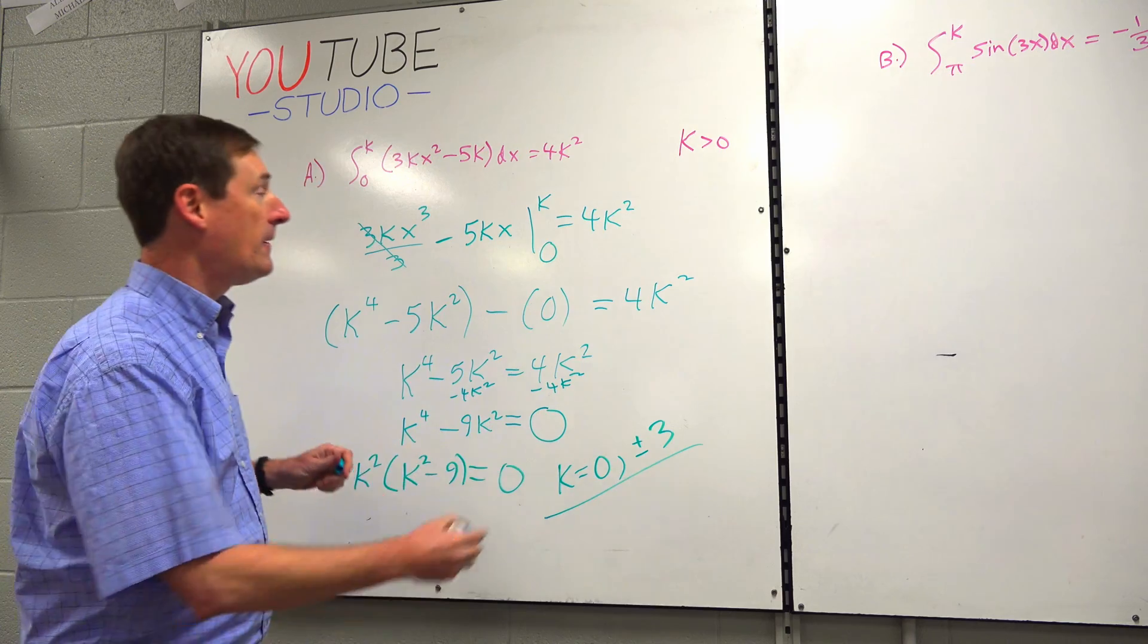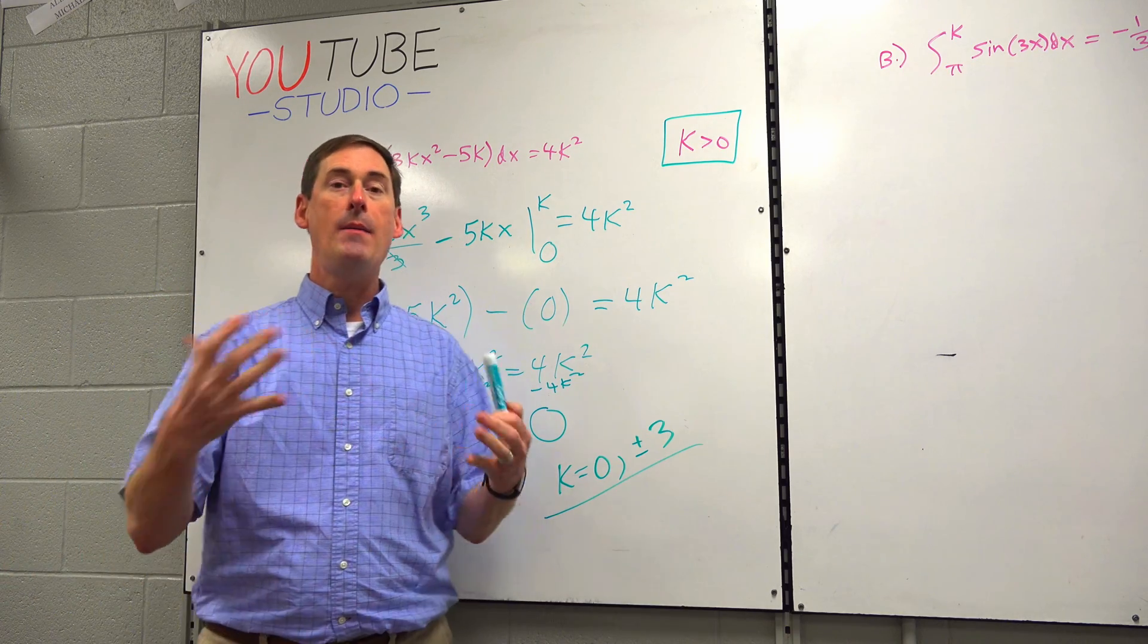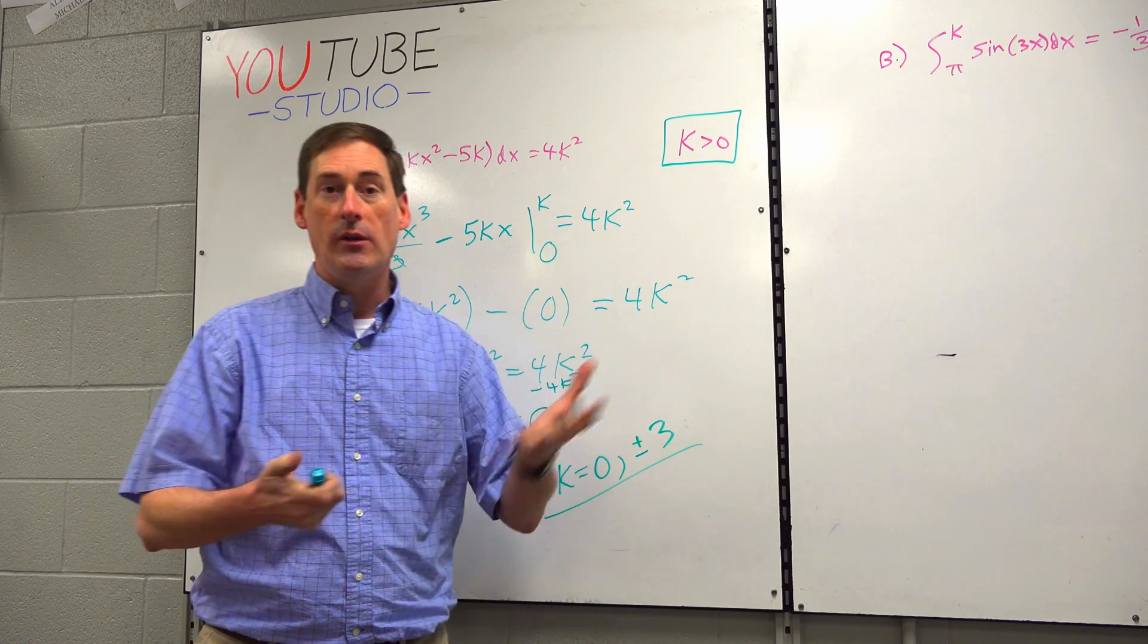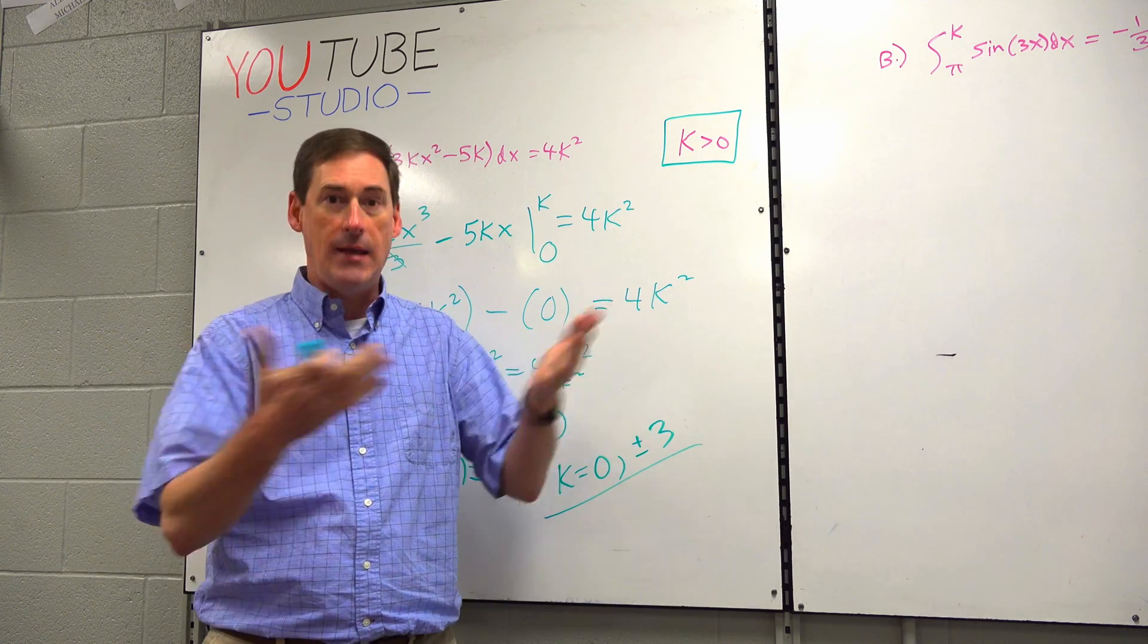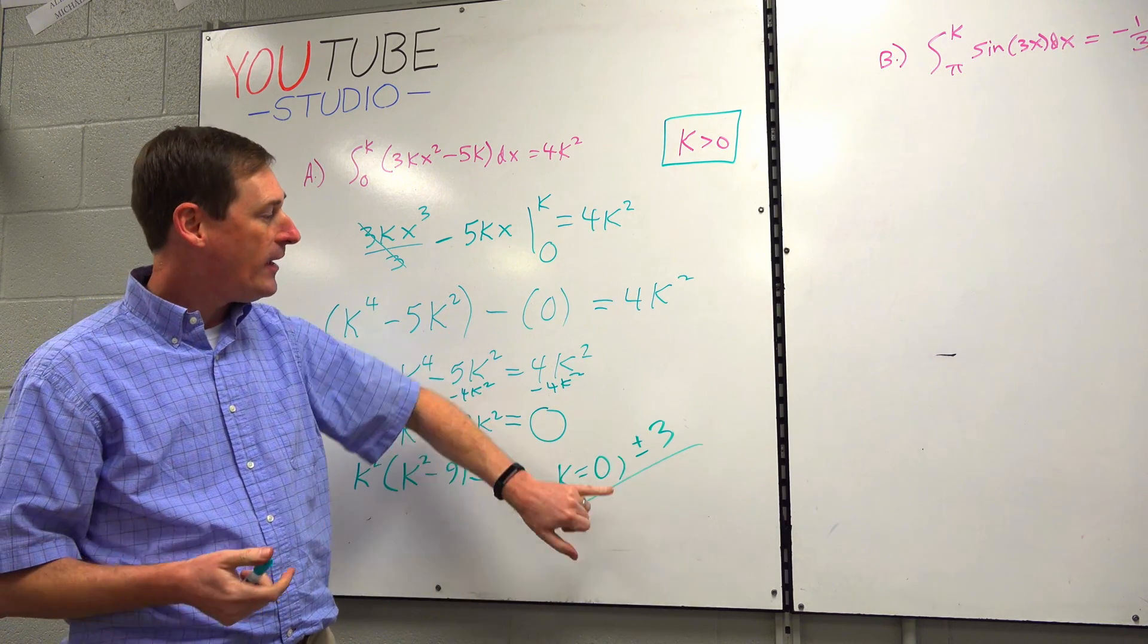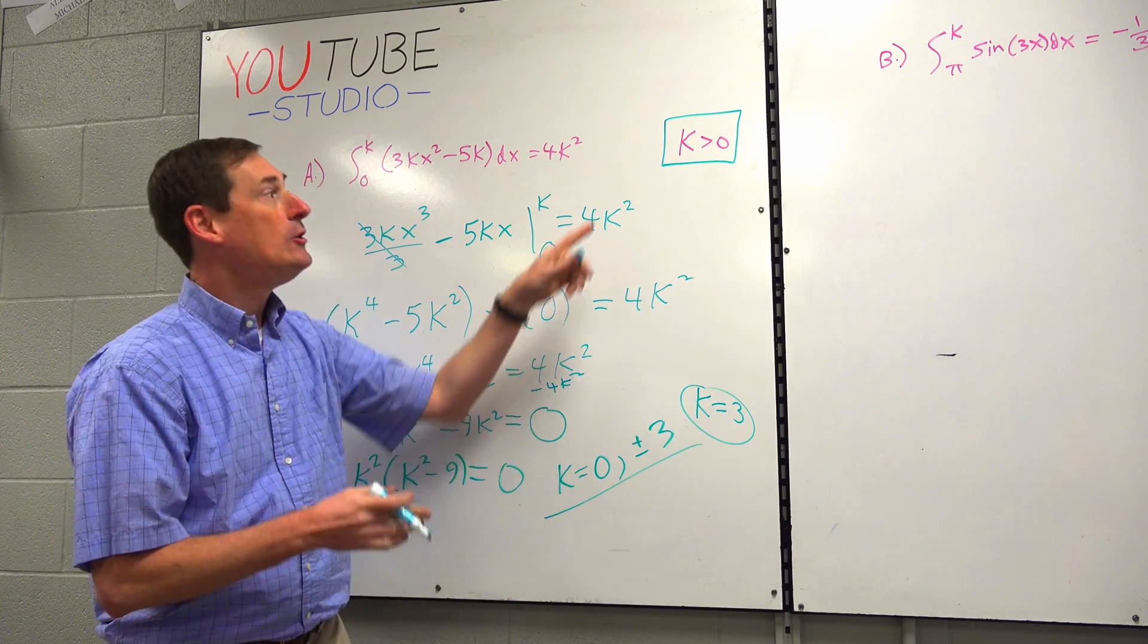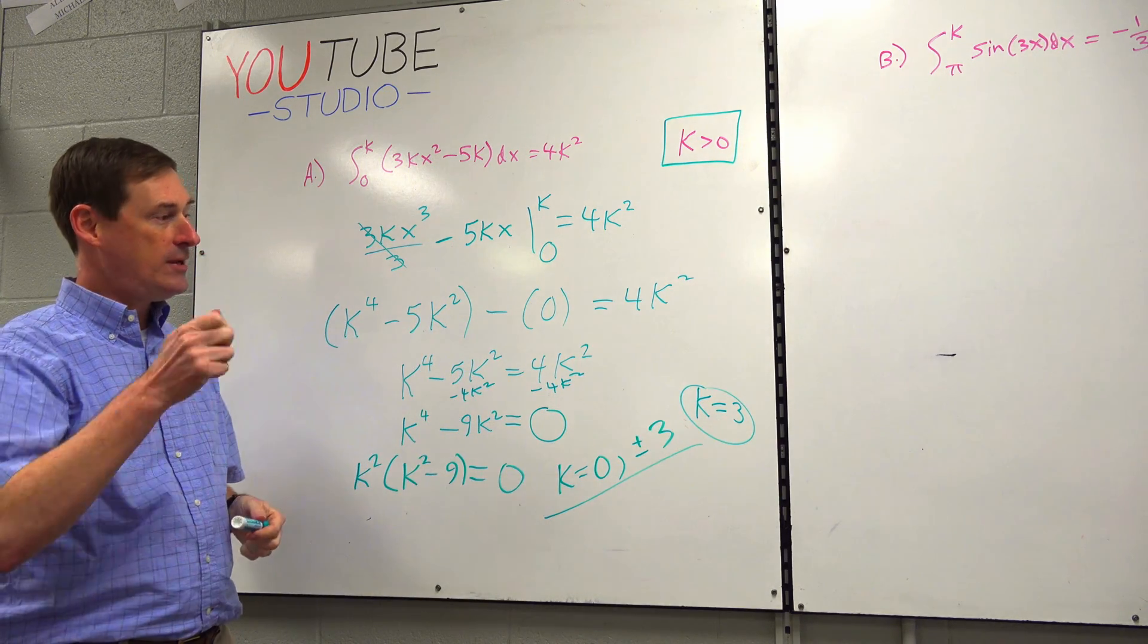Now, one more thing before you put down your final answer. There was a stipulation at the very beginning. Under the parameter, K is greater than zero. Those are your parameters, your domain. K greater than zero are the only valid answers, especially if this is like a real-life water bottle. It can't have negative length, negative height, negative depth. So, K is greater than zero. Zero is not greater than itself, so zero is out. Negative 3 is not greater than zero. Only positive 3 is the real answer. K equals 3. Done.